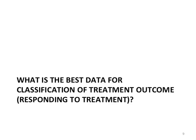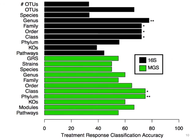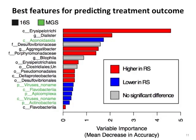Moving on — the more interesting question was whether we could predict who's going to respond to treatment. At this point, metagenomics started to come into play more. The genus level was still slightly higher in the 16S data, but suddenly we saw class and phylum level from the metagenomic data reach significance for determining who would go into sustained remission. What's even more interesting is that things you wouldn't pick up from 16S — like viruses or microbial eukaryotes — popped up as important features, and we're now doing more viral work to understand this.